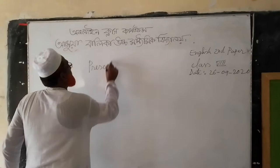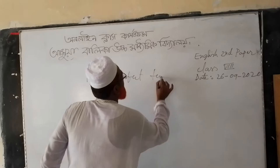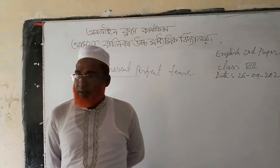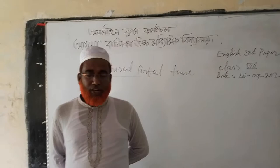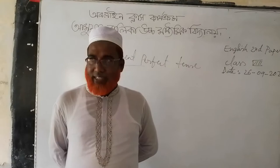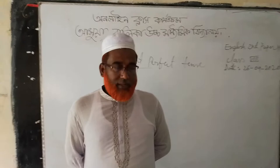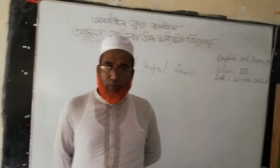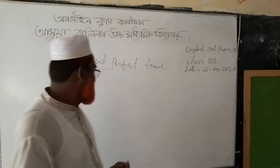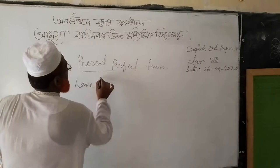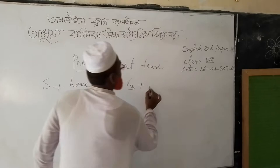Dear learners, present perfect. You have to understand: present perfect tense is such an act or action that has been done once, but its result is still continuing. For this reason, you have to learn the formation of present perfect tense: subject plus have or has plus verb 3 plus object.